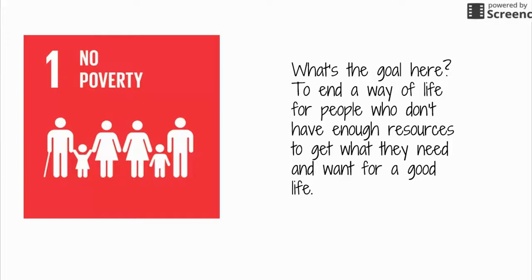The first global goal is no poverty. Poverty means people live in such conditions where they're so poor they can't afford food. As you heard in William's story, they have to scrape by and only have one meal a day. The first goal is to end that way of life where people don't have enough resources for their basic needs.